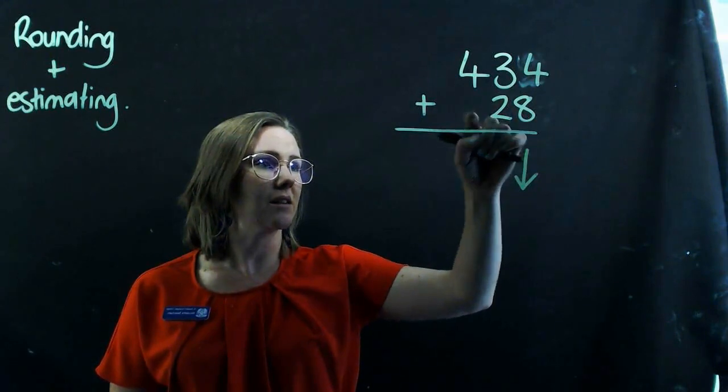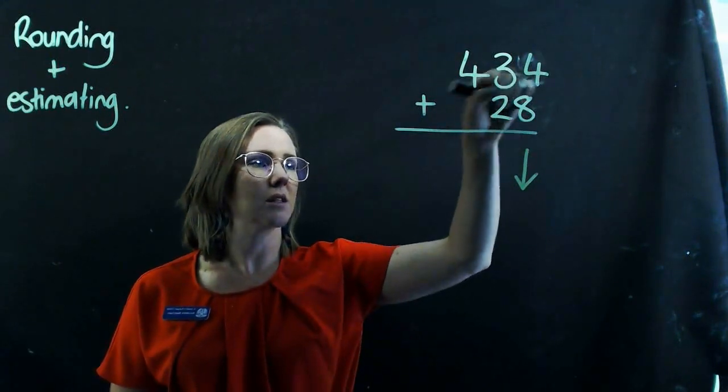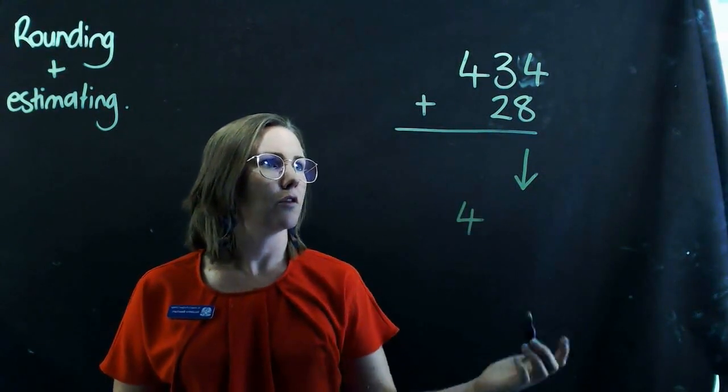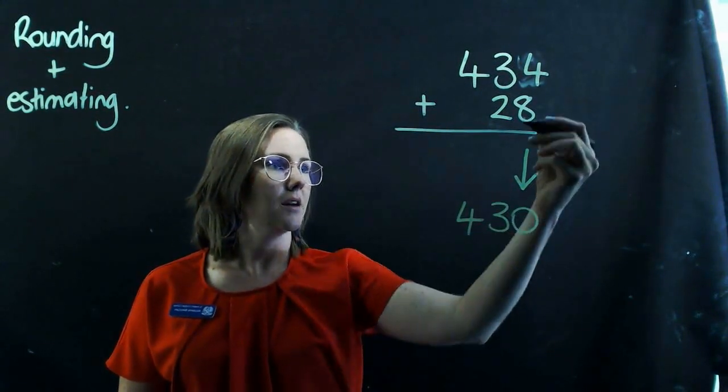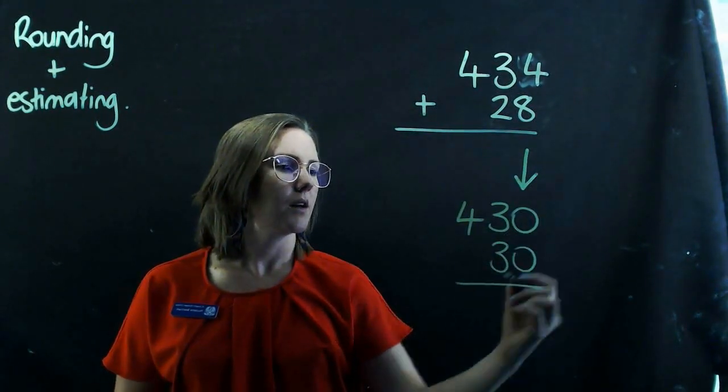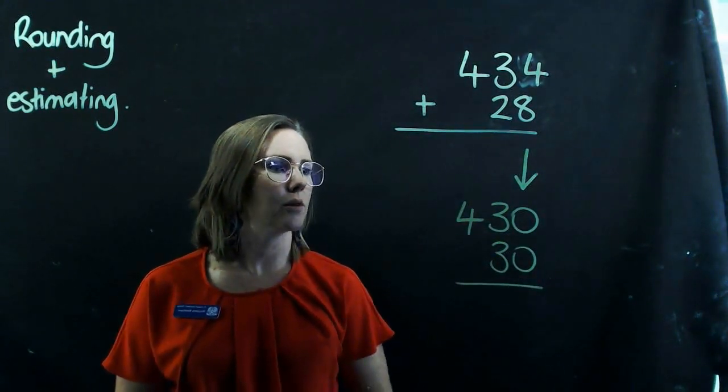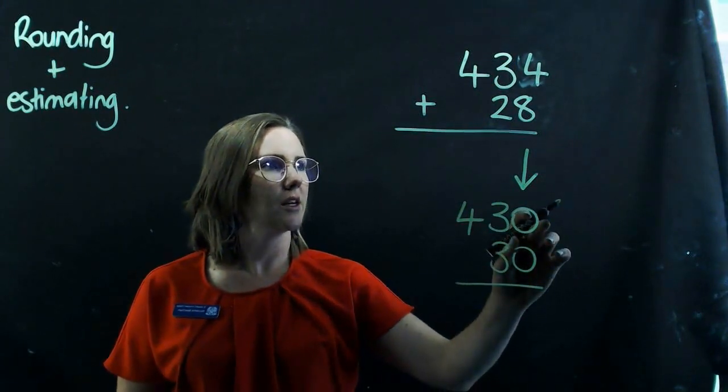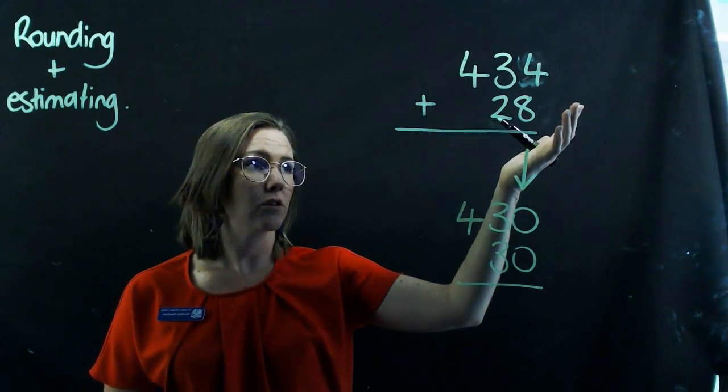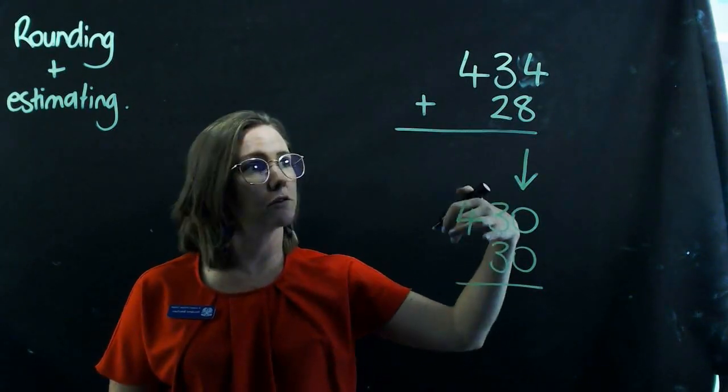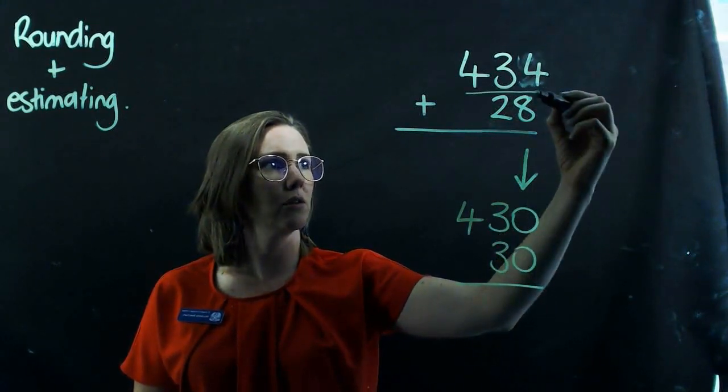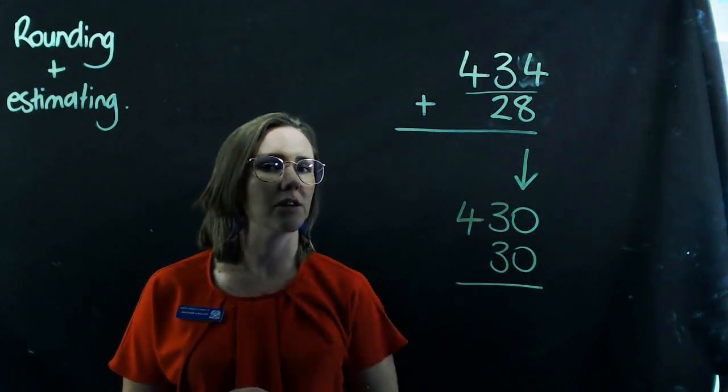So this is a number that's in the tens, but this is a number that's in the hundreds. So you would round that to 430. 28 would be rounded to 30 as well. Now the reason why you would round that to 430 is the golden rule. If it's five and above, then you're going to round up. If it's below five, then you round down. That's why I rounded the 434 down to 430.